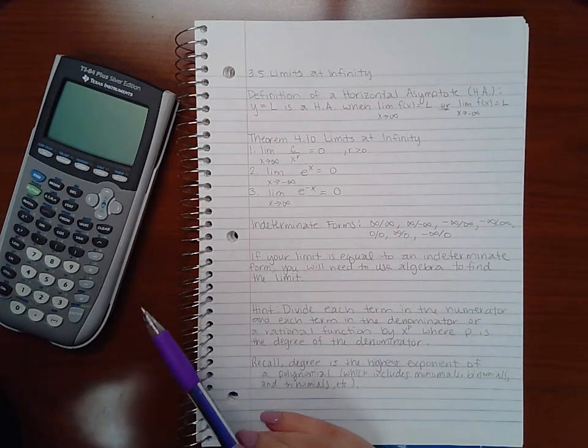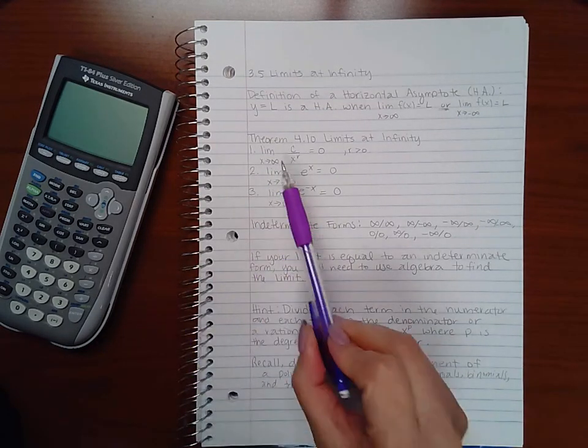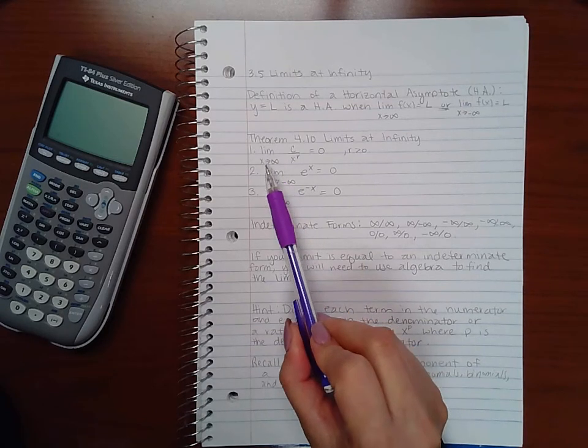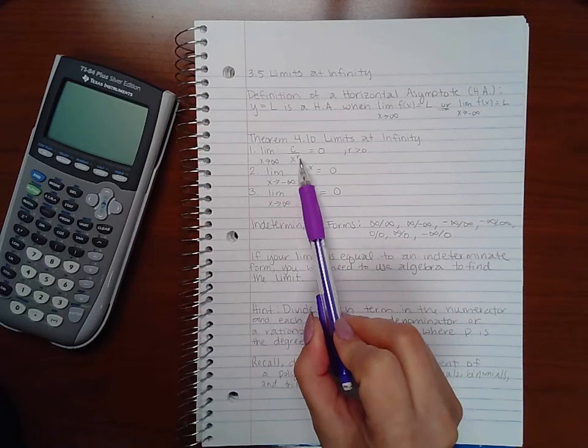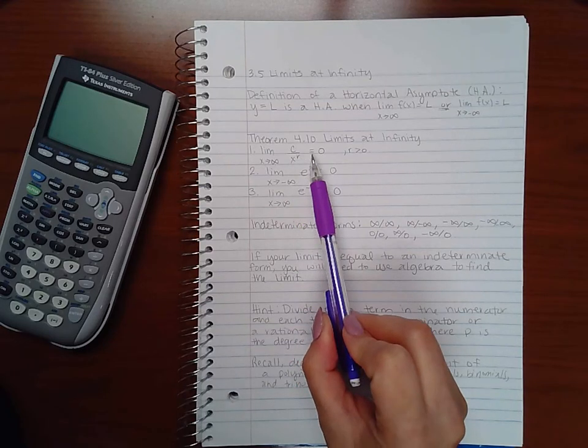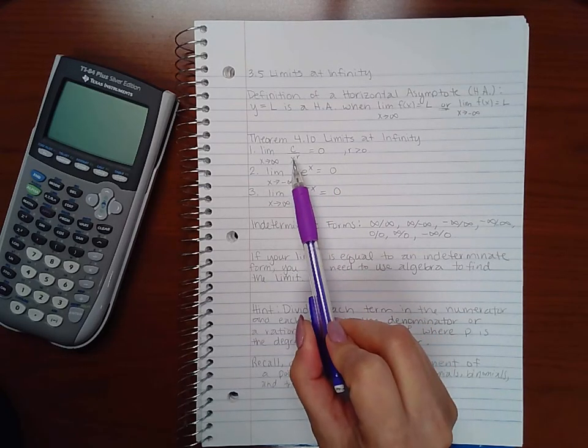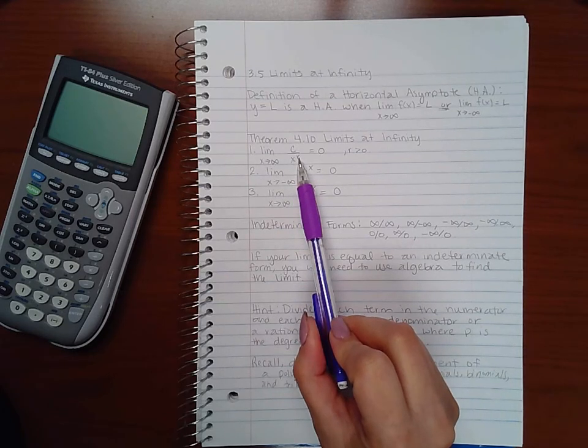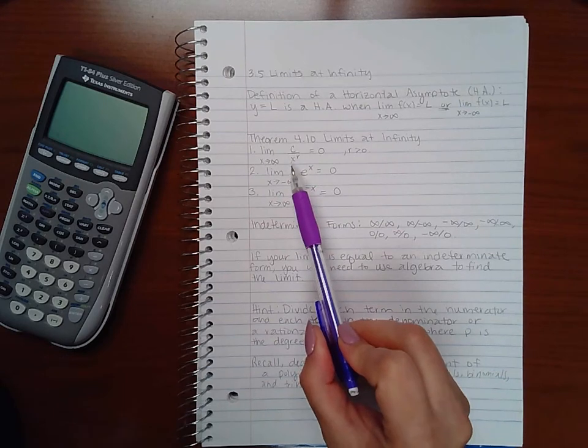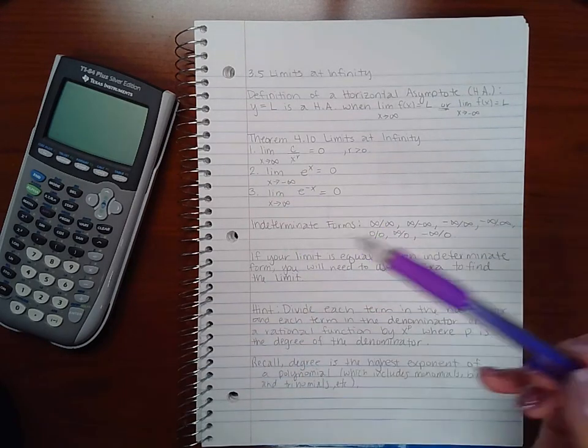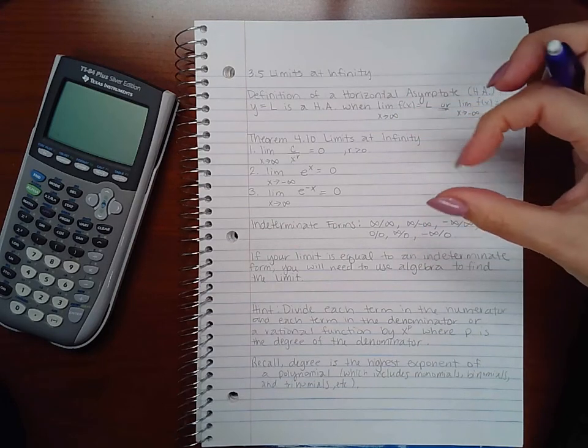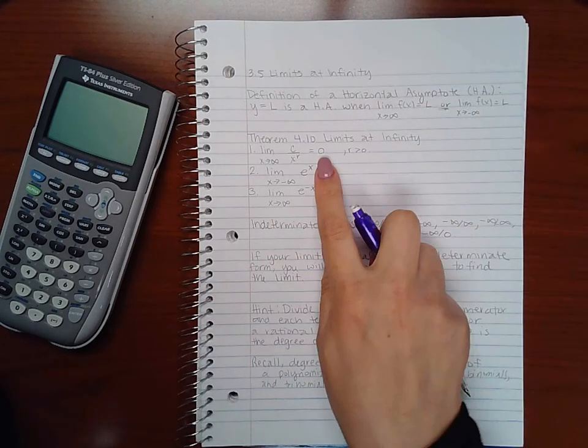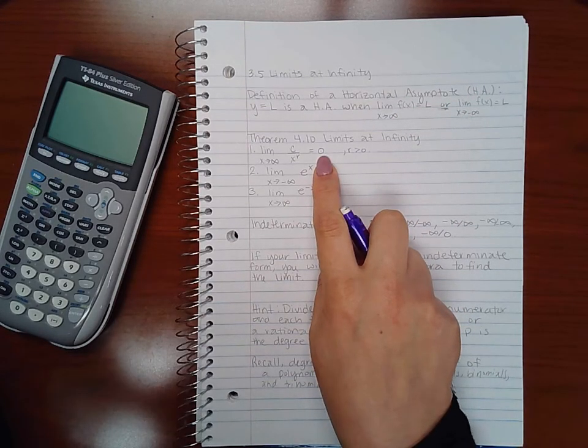Theorem 4.10 says limits at infinity. The limit as x approaches infinity of any constant over x to a positive power will always equal zero. The logic here is that x grows very large. If you raise it to an exponent, it grows even larger. And if the denominator is getting bigger and bigger, the fraction value itself is getting smaller and smaller, getting closer and closer to zero.